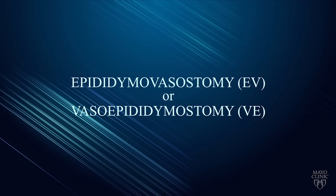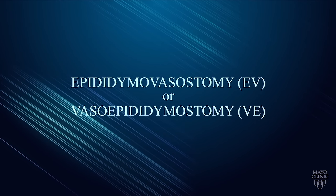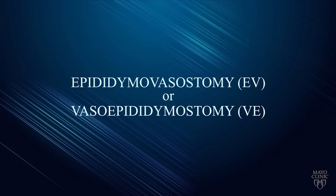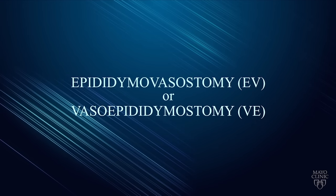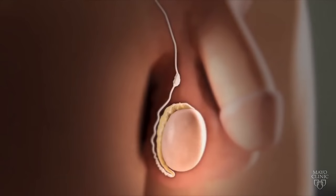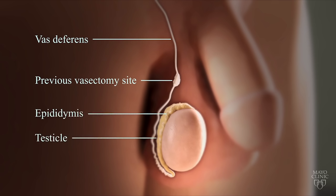In certain conditions, a more complex reconstruction is required, known as an epididymovasostomy, or vasoepididymostomy. The animation provides a brief overview of the relevant anatomy, with the vas deferens, prior vasectomy site, epididymis, and testicle highlighted.